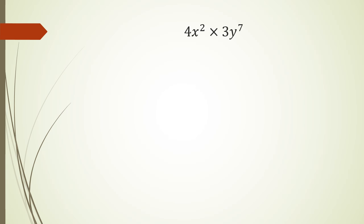So here I've got 4x squared times 3x to the power of 7, which gives 4 times 3 equals 12. But now the bases are not the same — when I say bases, I'm talking about these variables here. If they're not the same, you can't combine them, so your answer is just 12 x squared y to the power of 7. Do not write this as 12xy to the power of 9 — that is incorrect. You only add the powers if the variables are the same.